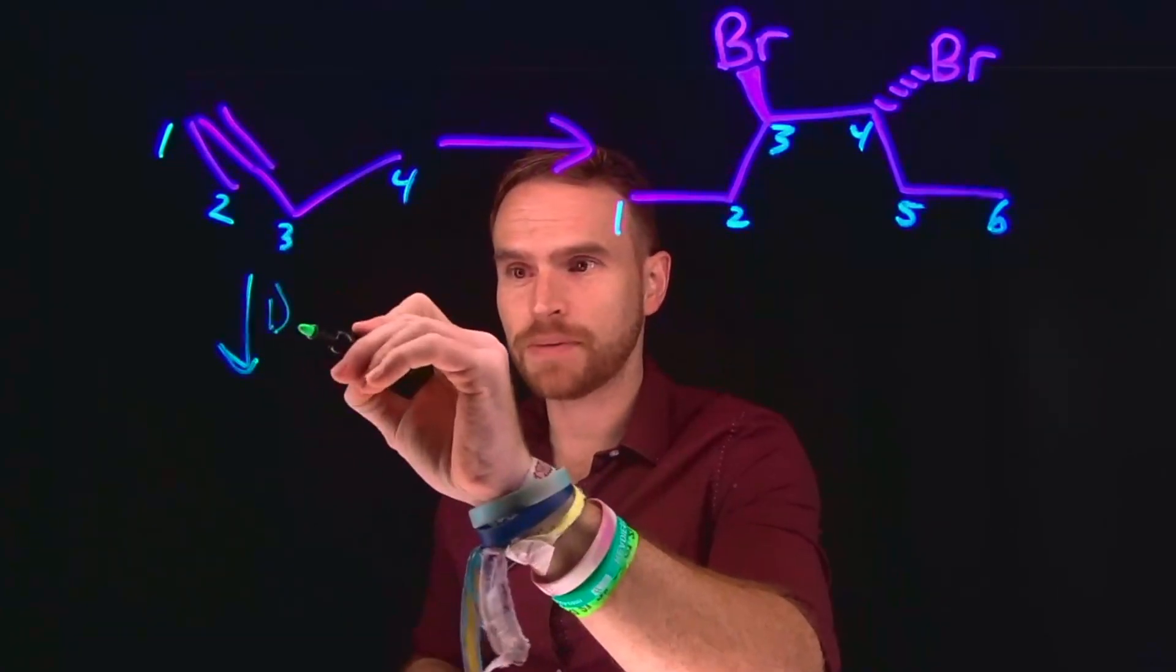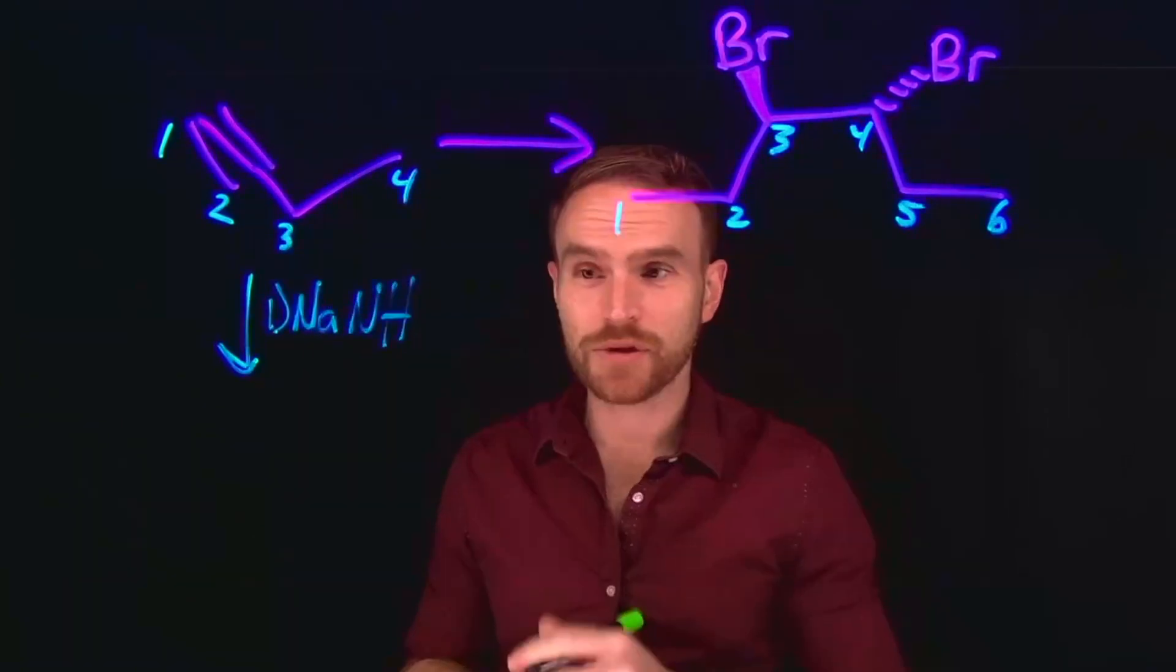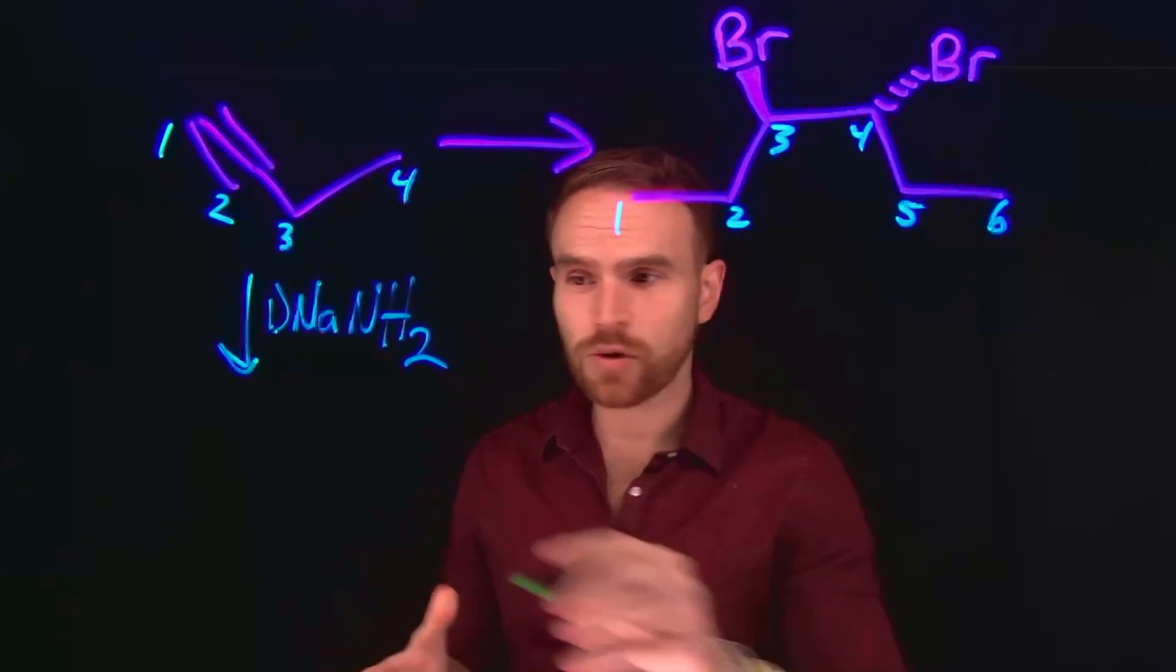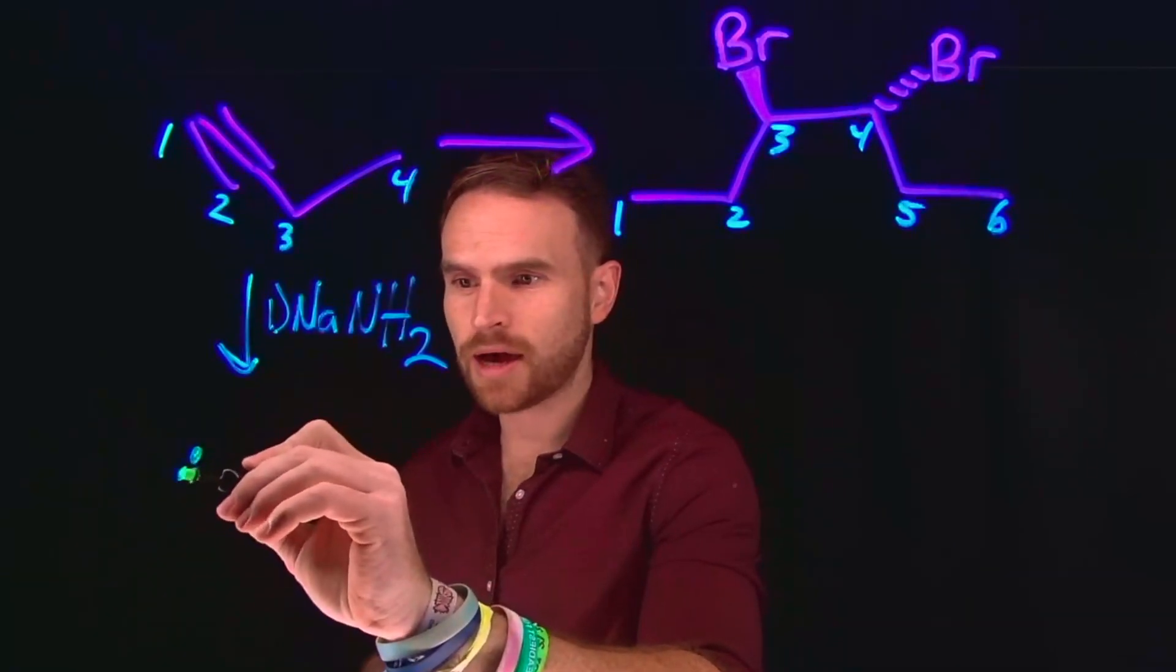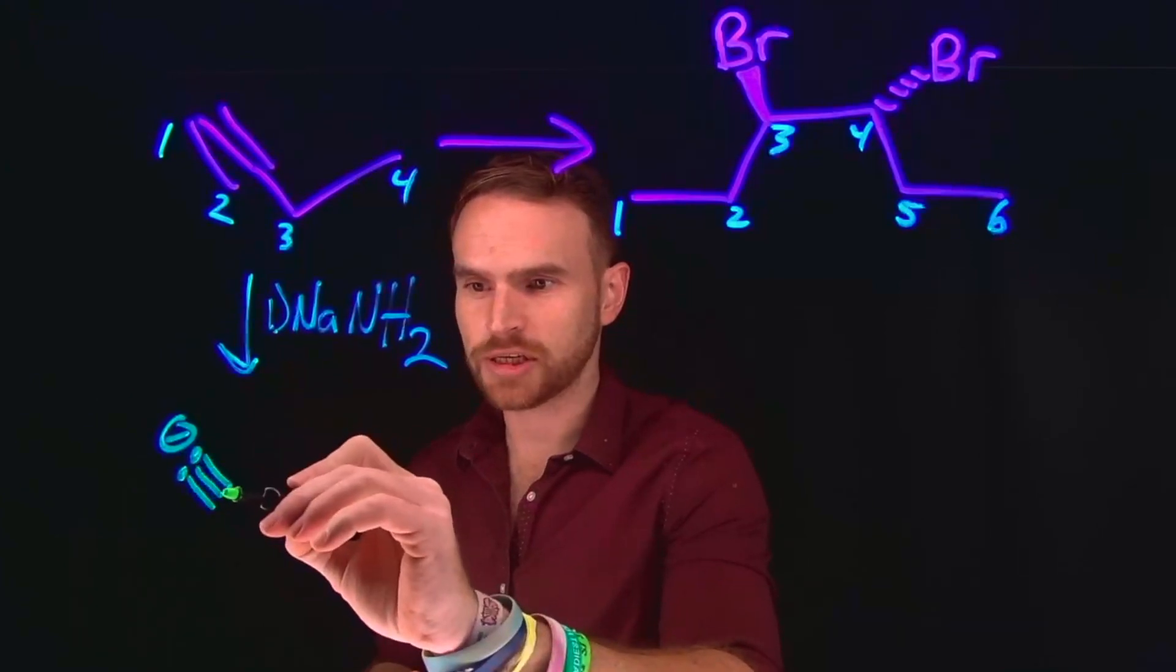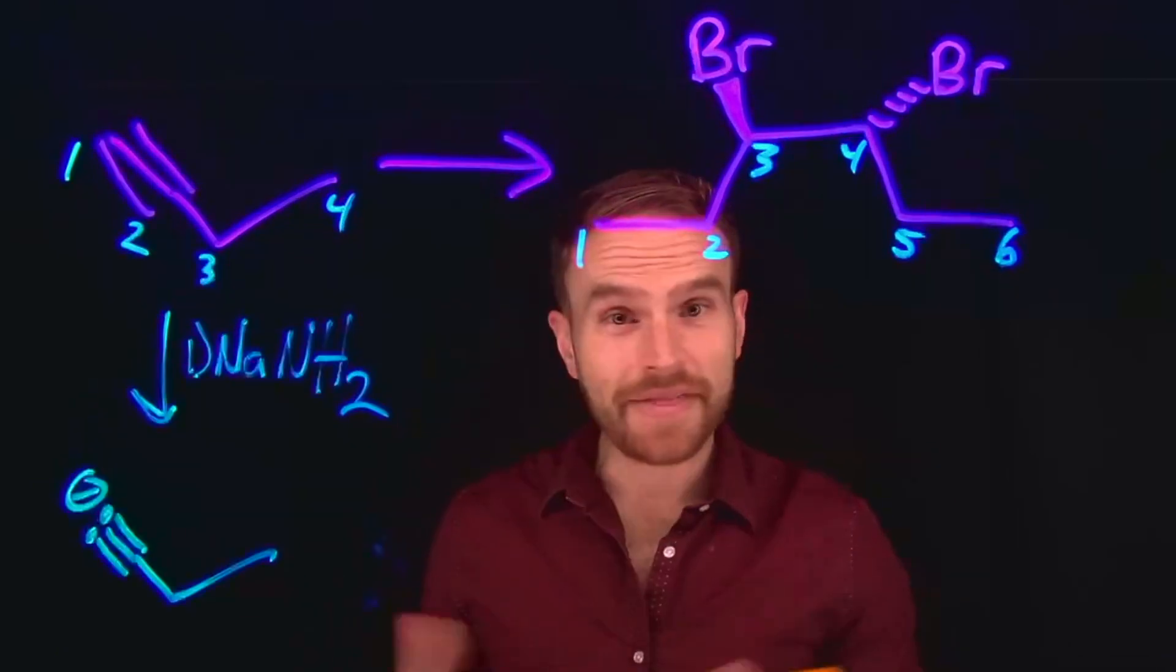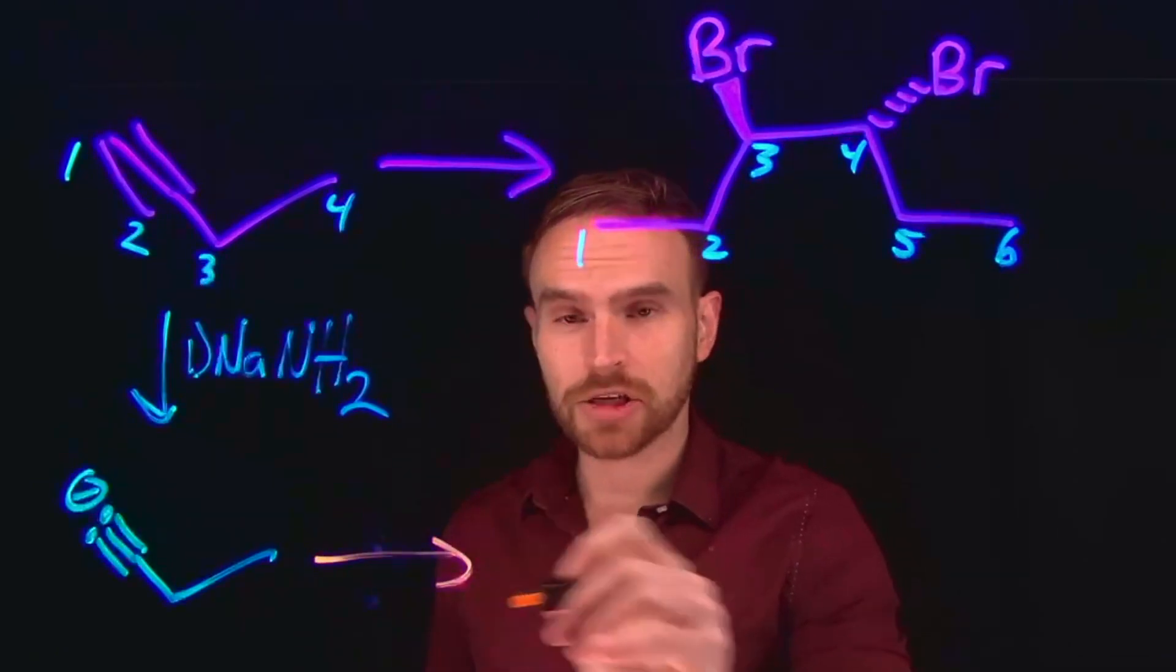So now that we've identified that pathway retrosynthetically, we can now move in the forward direction, where the first step is going to be deprotonation of that terminal alkyne hydrogen using sodium amide. That is going to generate that terminal alkyne carbanion because we've deprotonated that hydrogen.